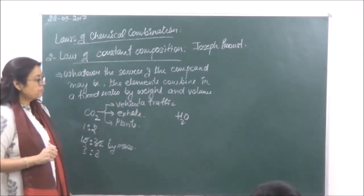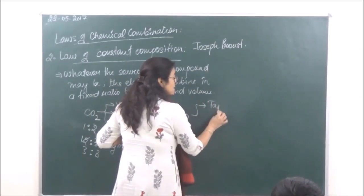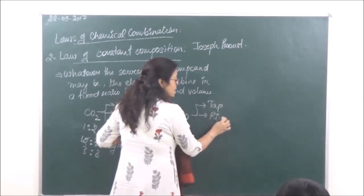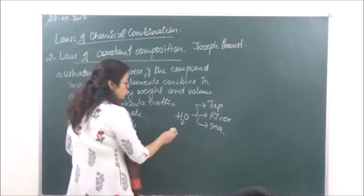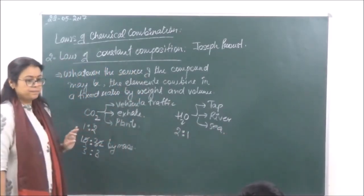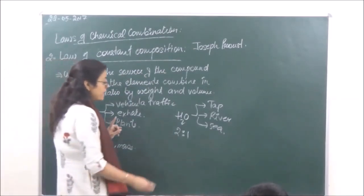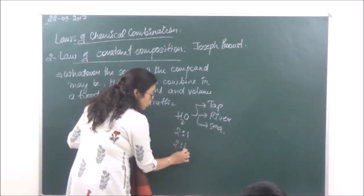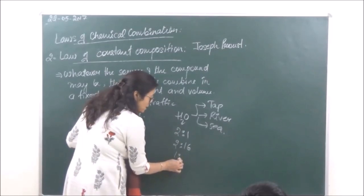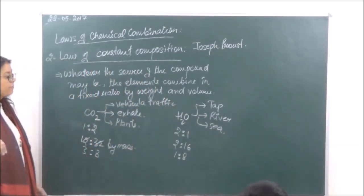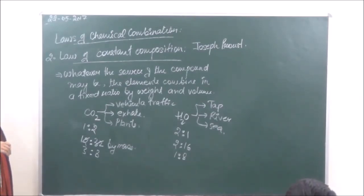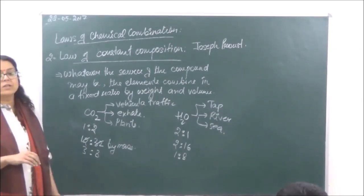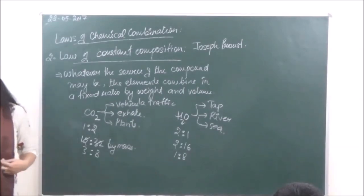Similarly, for water (H2O): by volume the ratio of hydrogen to oxygen is 2 is to 1. By weight, hydrogen is 2 grams and oxygen is 16 grams, so the ratio is 1 is to 8 by weight. Whatever the source of water may be, hydrogen and oxygen are always combined in 2 is to 1 by volume and 1 is to 8 by weight. This is the law of definite proportions.